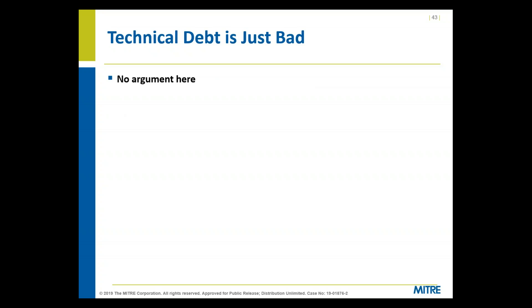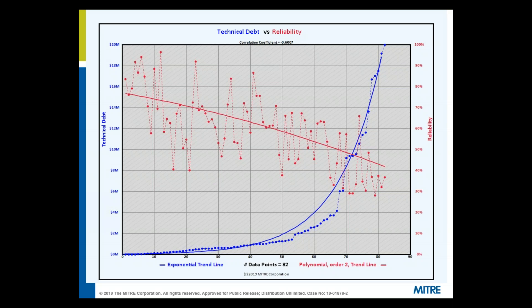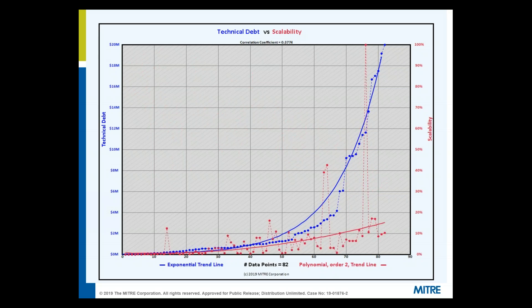Technical debt is just bad — I've yet to find anybody who thinks technical debt is good. When we look at technical debt versus maintainability, as technical debt increases in blue, maintainability decreases — confirming what we intuitively believe. The more technical debt you have, the harder it is to maintain your application. For reliability, the curve is actually accelerating — as technical debt gets larger, reliability gets worse faster. When we add scalability, as technical debt increases, scalability appears to be increasing — which is counterintuitive. That's the point where we looked at the model and said we need to make modifications. We wouldn't have known that if we hadn't been able to put it against this data corpus.